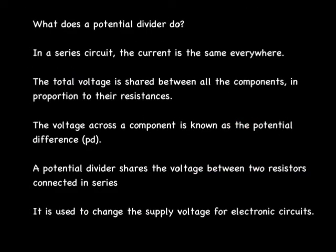So to answer the question about what does a potential divider do, here are some key statements. Just a reminder, in a series circuit the current is the same everywhere. That means that the total voltage is shared between all the components in proportion to the resistances, as we've just seen. The voltage across the component is known as the potential difference. And a potential divider simply shares the voltage between two resistors connected in series. It's used to change the supply voltage for electronic circuits, so it's a very important application of a series circuit.